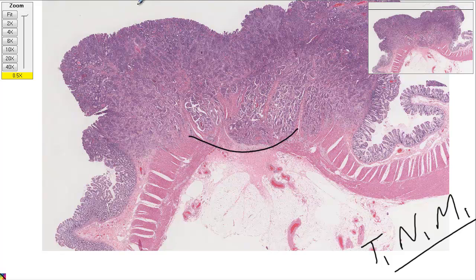Metastasis always happens through the circulatory system, through the blood of the vessels. Going through the lymph nodes is one of the first steps, but getting to the liver and the lung, it's got to get into the blood vessels somehow. The lymphatic in your colon connects to a local lymph node, but does not connect through lymph only to the lung — so it must have gone into the blood somewhere.